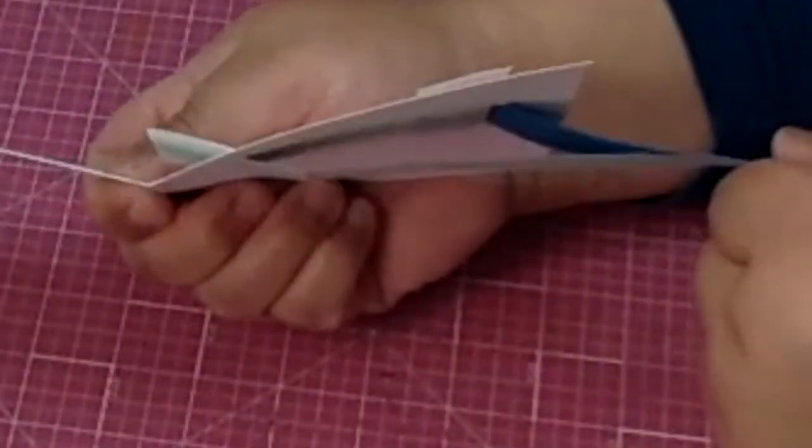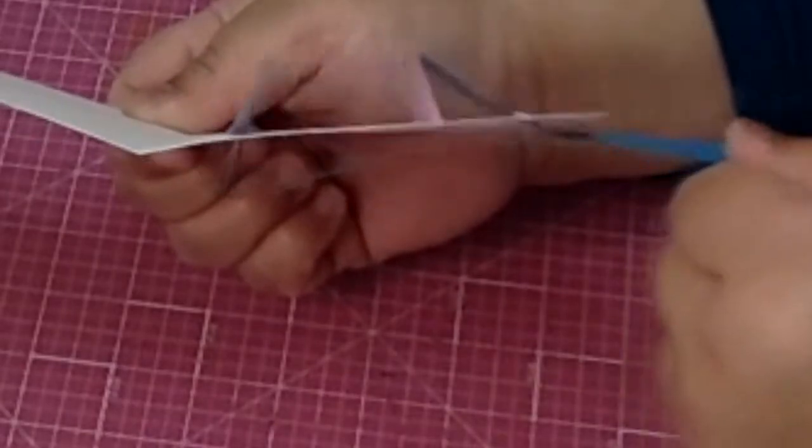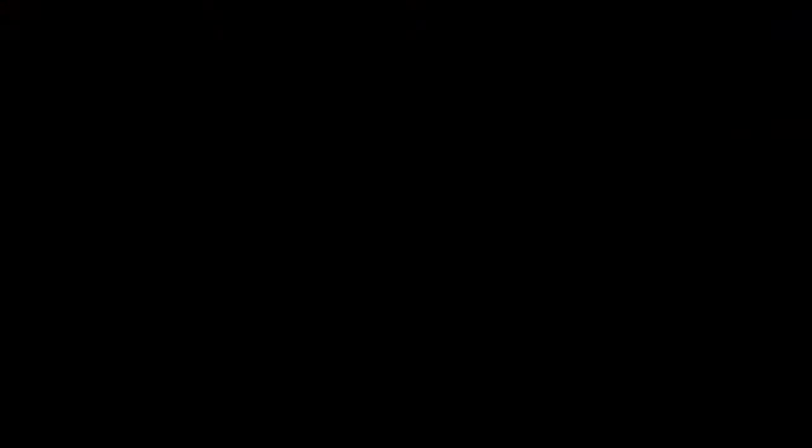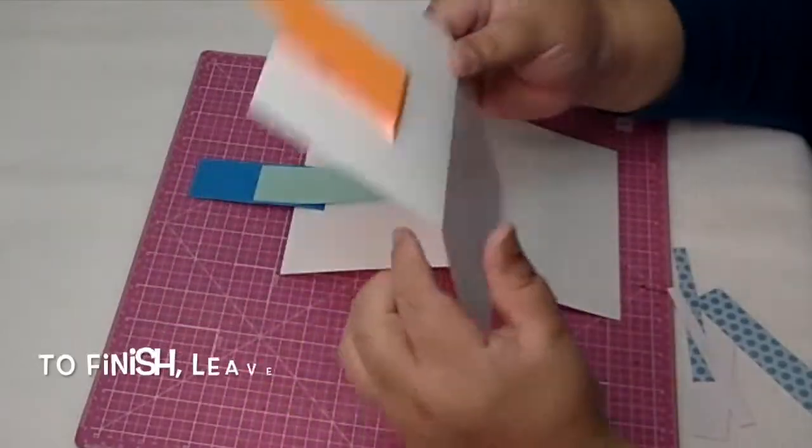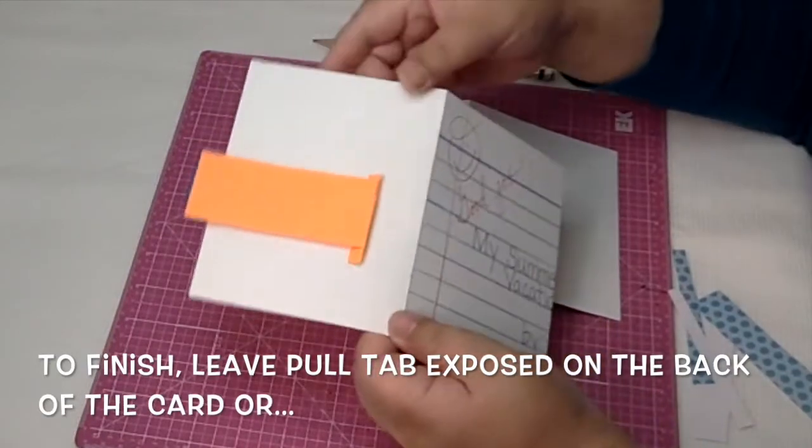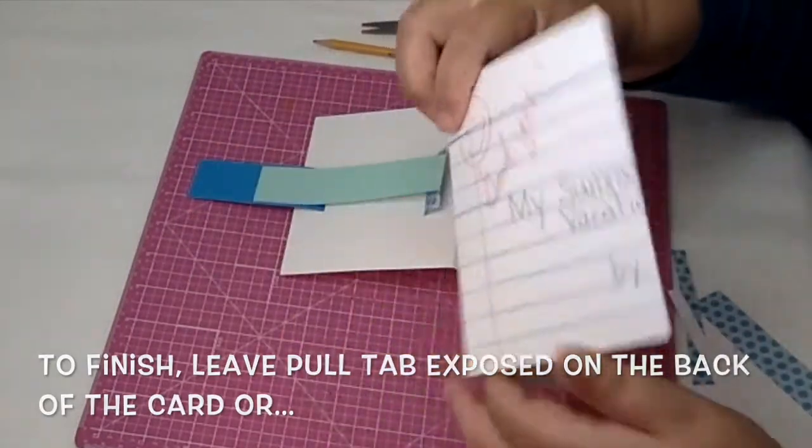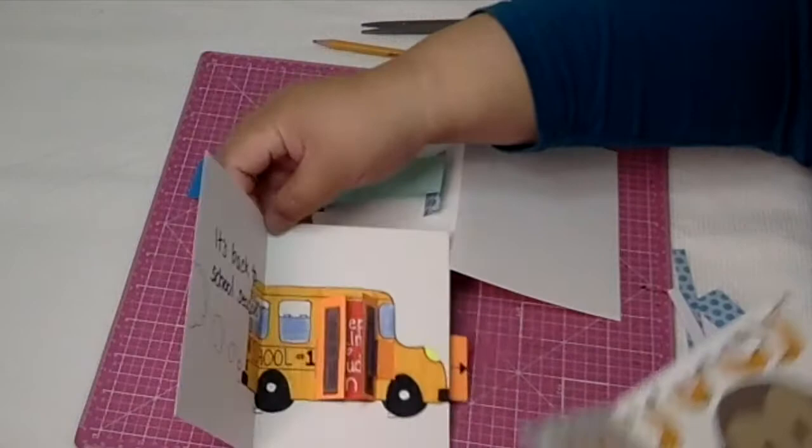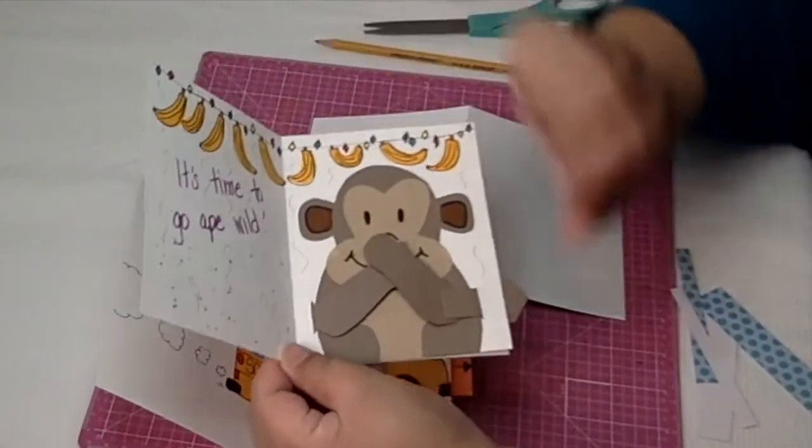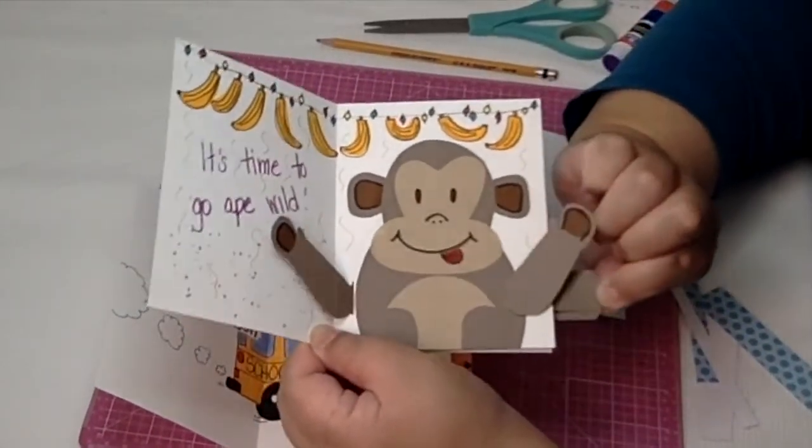And that's it! You can finish this off by taking another piece of paper and just covering both of the tabs on the back like this so that it looks smooth and one colored, or you can cover the entire back like I did with this card with a full cover sheet like this.